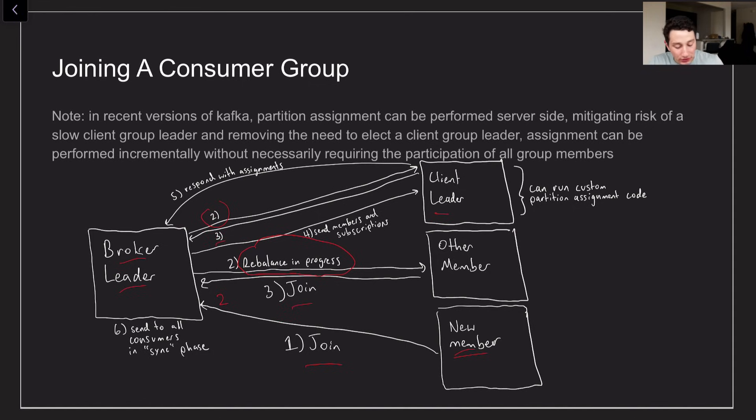So basically out of these group members you can see that I've written one is called the client leader. One is just a random other member and then we've got our new member but effectively that's just going to be an other member as well. So what the client leader is responsible for is the broker leader is going to send it in step three all of the members of the group and all the subscriptions. And the client leader is responsible for actually calculating which partitions or which topic partitions are going to be assigned to which consumer. So it can use things like a variety of different policies and also things like rack awareness in order to make these decisions.